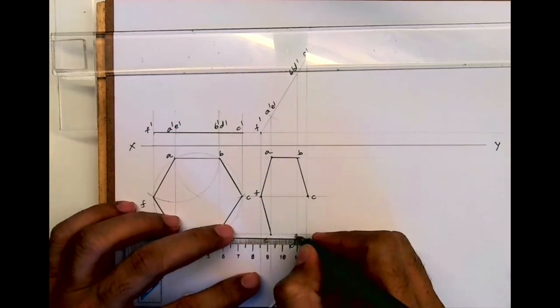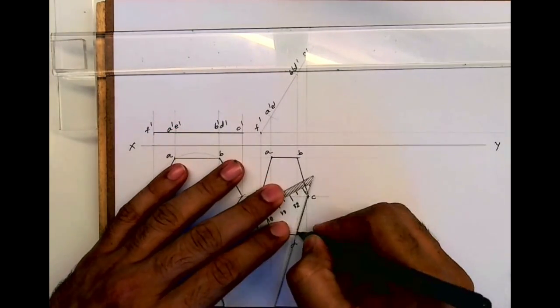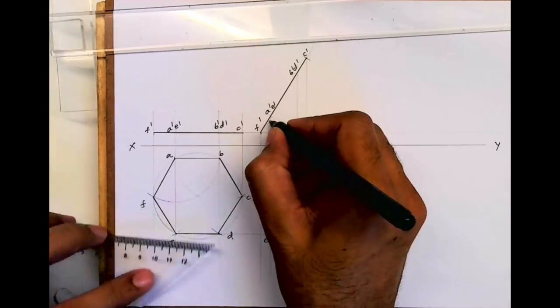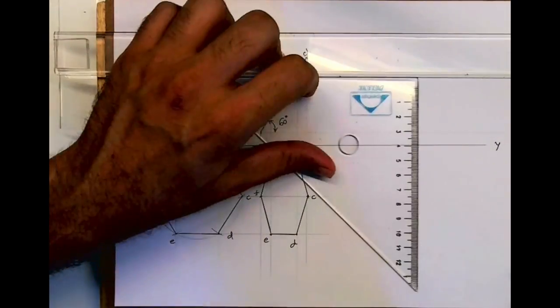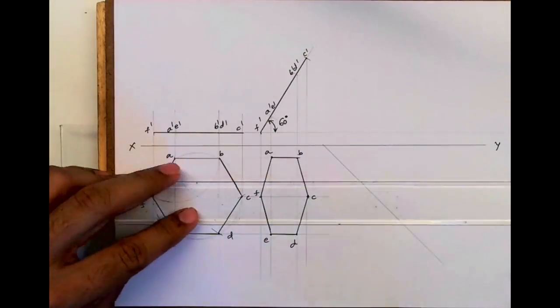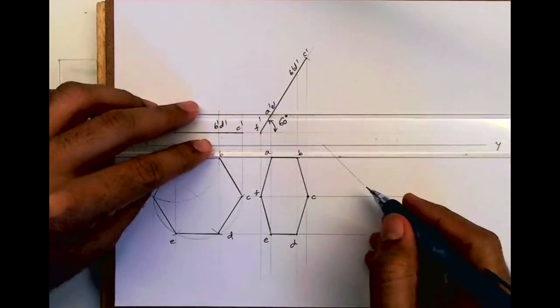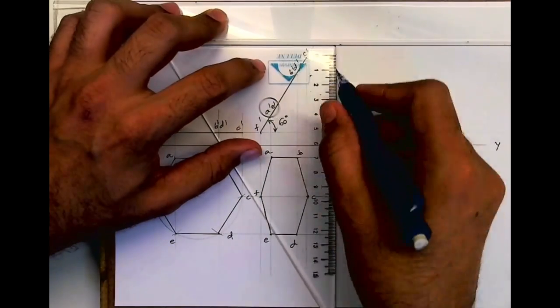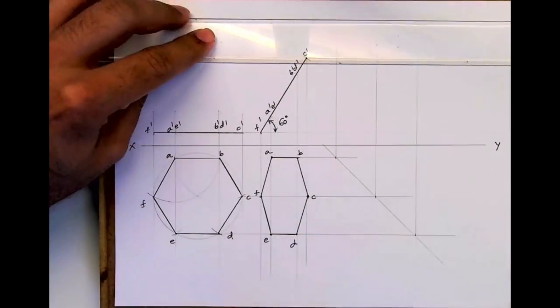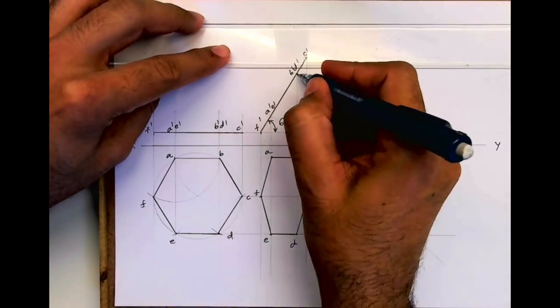Now we need to draw the side view. We'll draw 45 degrees and project. From here, draw vertical lines, and from here draw horizontal lines.